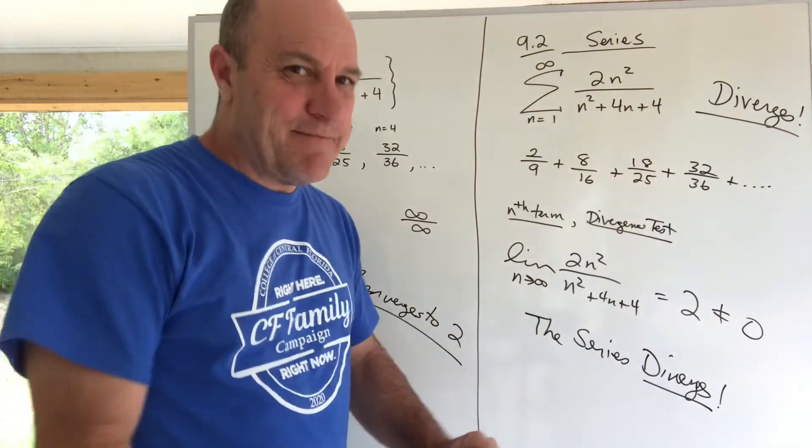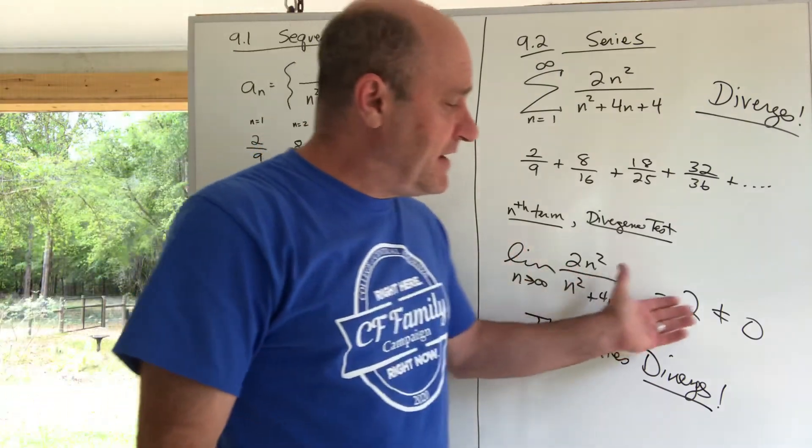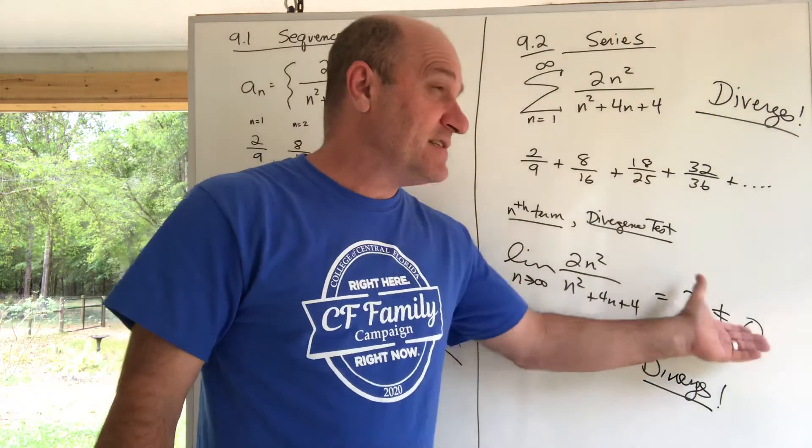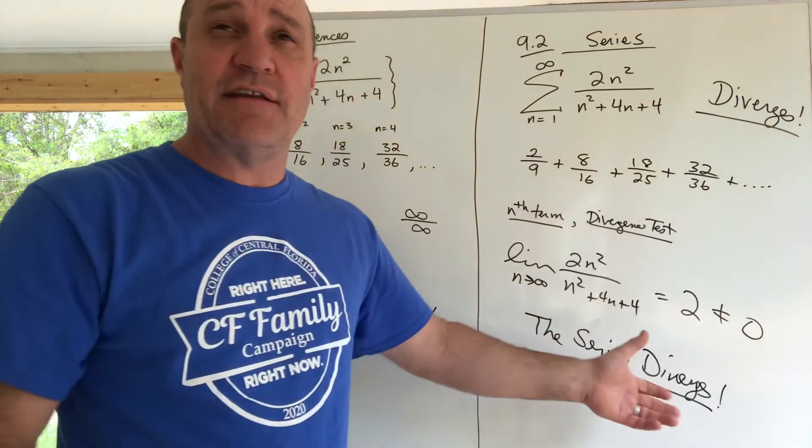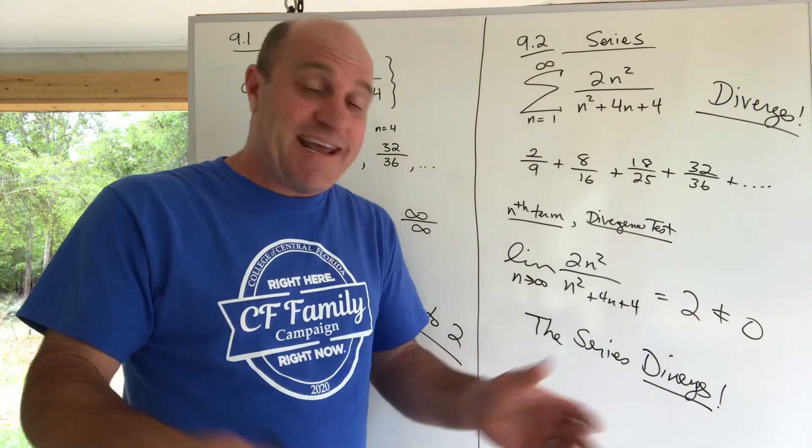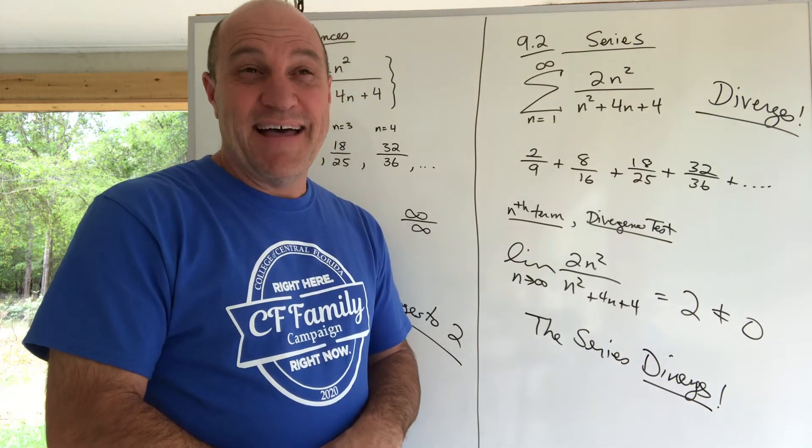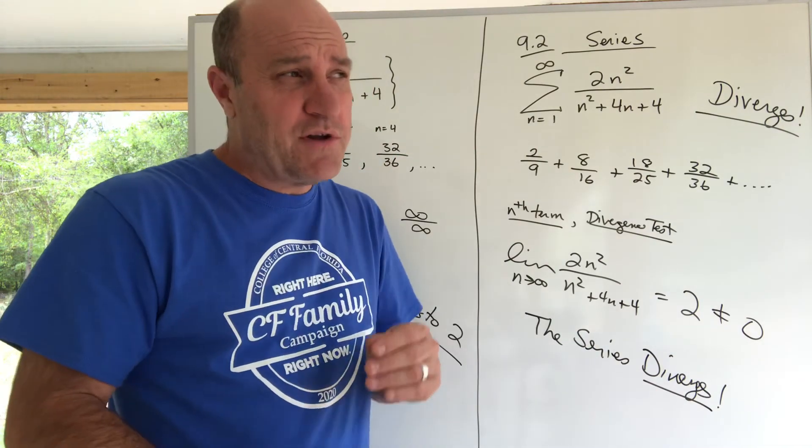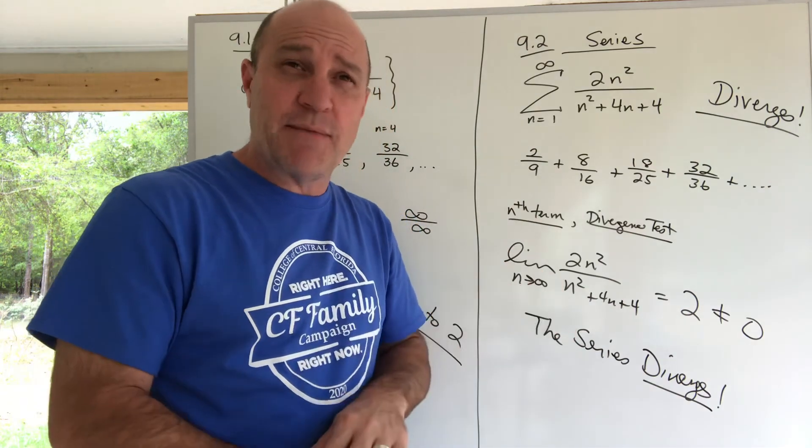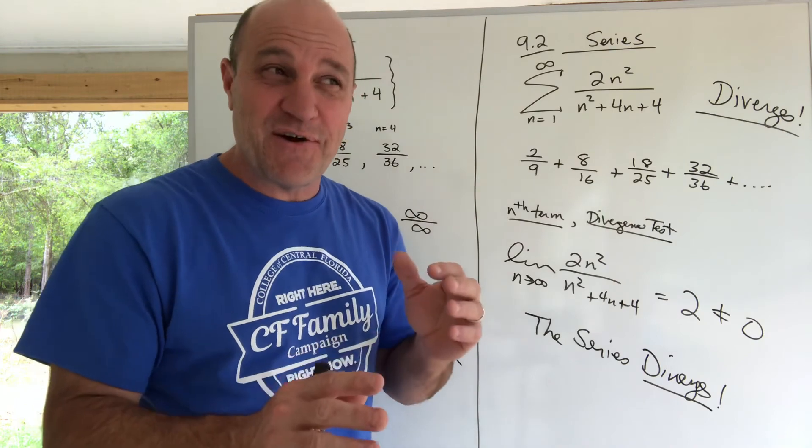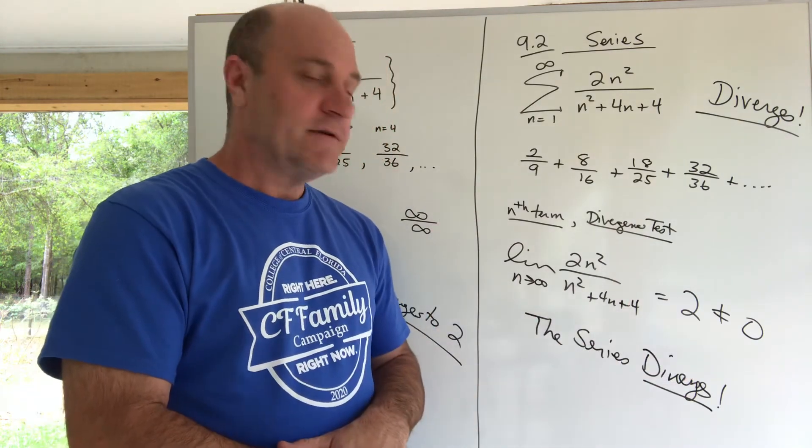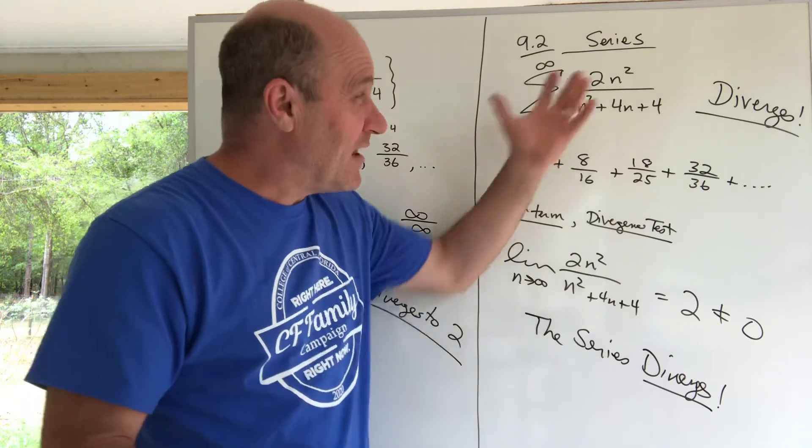That kind of makes some people say, 'Oh, so if the limit is zero, it converges.' That's not what it says. If the limit is not zero, it diverges - it's guaranteed to diverge. If the limit is zero, it's got a chance to converge, and a lot of them do. It depends on the rate and how fast it's approaching zero. But there are exceptions - not all of them. If it approaches zero, it doesn't necessarily mean it converges.